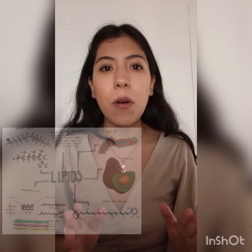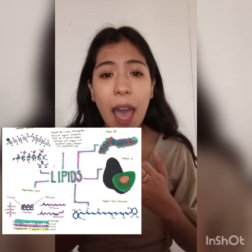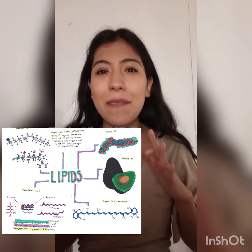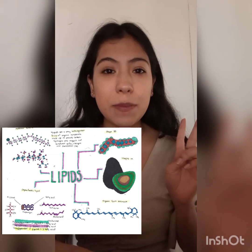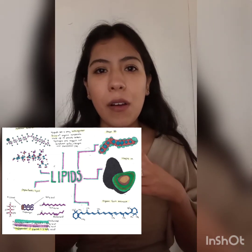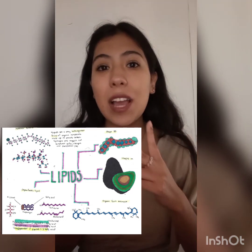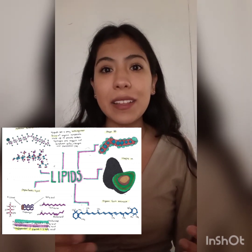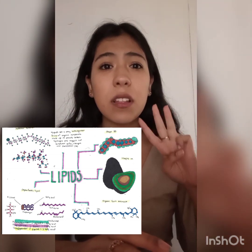And now the lipids. The lipids are a very heterogeneous group of organic compounds, mainly made up of carbon, hydrogen and oxygen, and sometimes sulfur, nitrogen and phosphorus. There are basically two types of lipids: fats or oils, also called triglycerides. The functions of lipids are very varied; we can describe them in the following way: structural, energy, transport, and regulatory.